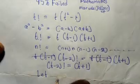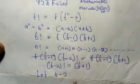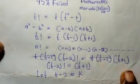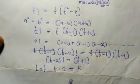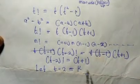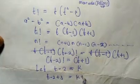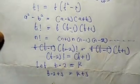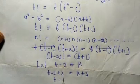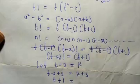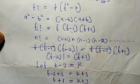Now, let t minus 2 equals k. When t minus 2 is equal to k, adding 3 to both sides, we have t minus 2 plus 3 is equal to k plus 3. This implies that t plus 1 is equal to k plus 3.